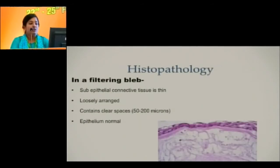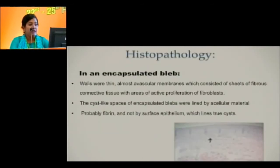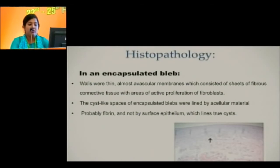Briefly about histopathology: in a filtering bleb, the sub-epithelial connective tissue is thin, loosely arranged, with clear spaces of about 50 to 200 microns, and the epithelium is normal. In contrast, in an encapsulated bleb, the walls are thin, almost avascular membranes which contain fibrous connective tissue and active proliferating areas of fibroblasts. The cyst-like spaces are lined by acellular material — mainly fibrin — and not by surface epithelium, which lines Tenon's cysts.